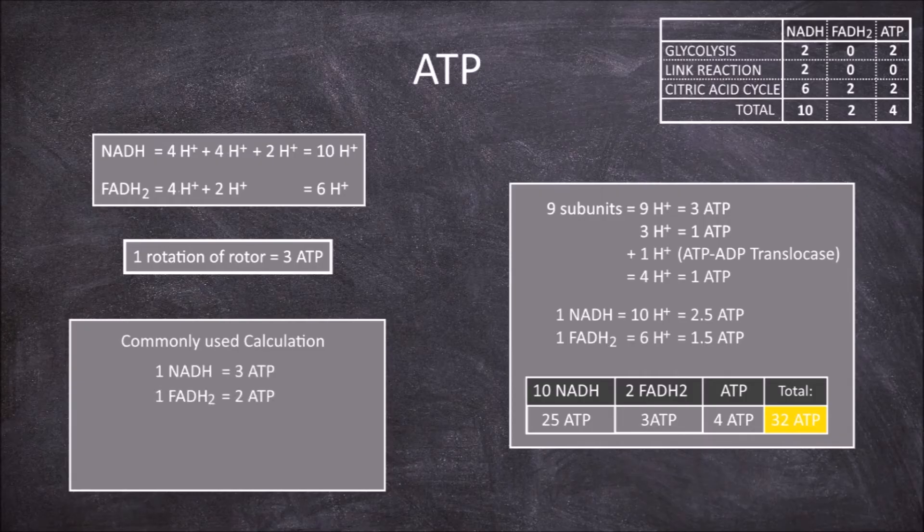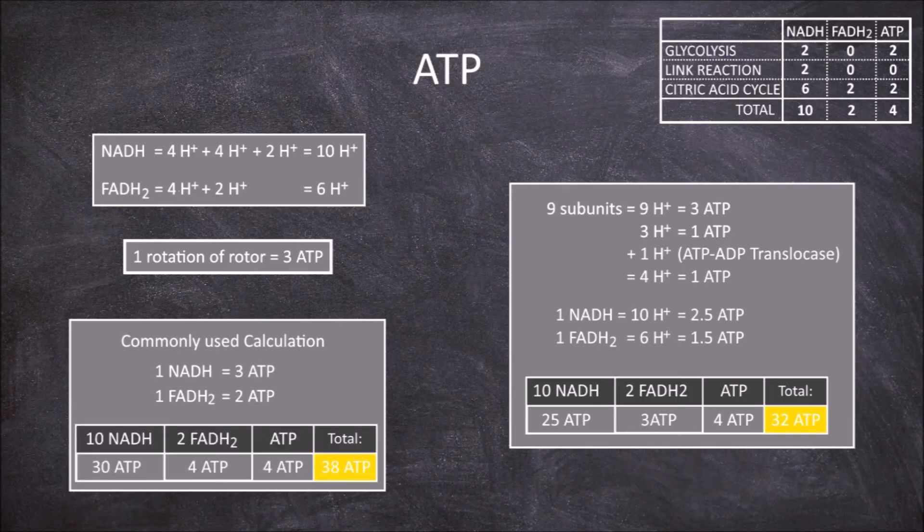Many calculations round up the estimate of ATP to 3 ATP for each NADH, and 2 ATP for each FADH2, which would give a total of 30 ATP from NADH, 4 from FADH2.